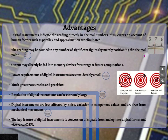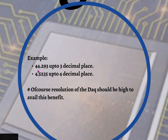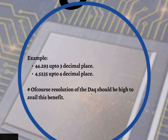With digital displays, you only observe the values written on the display, so chances of parallax are null. The reading may be carried to any number of significant figures by merely positioning the decimal point. For example, a digital instrument measuring up to 3 decimal places will show a value like 44.293, while one measuring up to 4 decimal places can show something like 4.5235. To increase resolution, the DAC used in the digital technique — which will be discussed in detail in upcoming units — must be of high enough data acquisition capability.